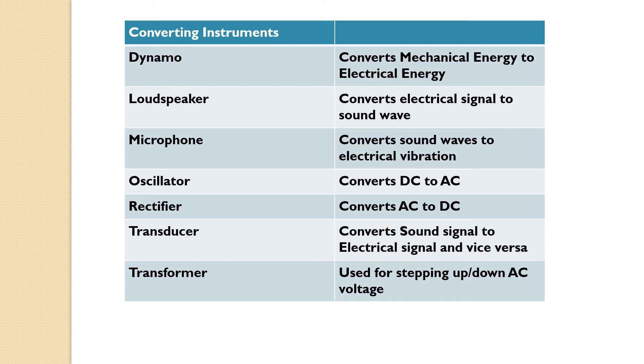Oscillator converts DC to alternating current. Rectifier converts alternating current to direct current. Transducer converts sound signal to electric signal and vice versa, that is electrical signal to sound signal. Transformer is used for stepping up or down the AC voltage.